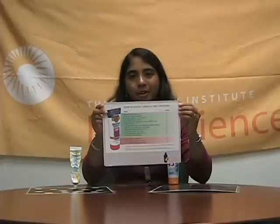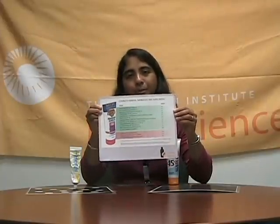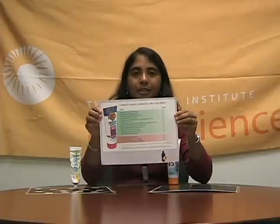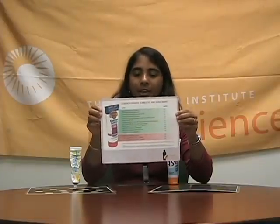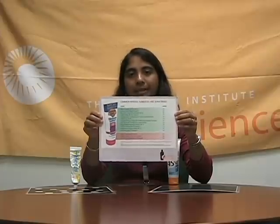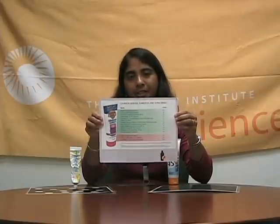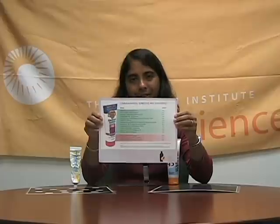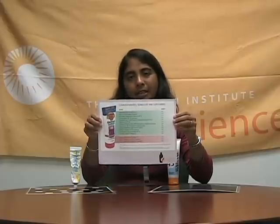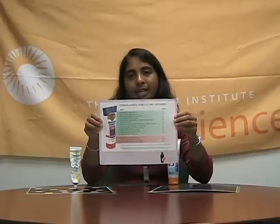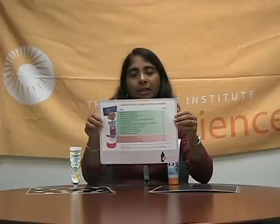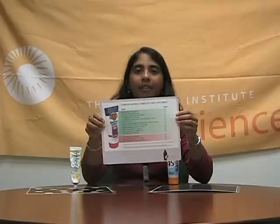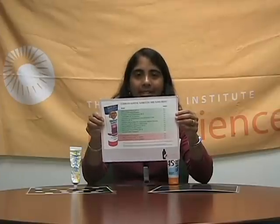There are many products on the market today that use nanoparticles of zinc oxide, but it's hard for the consumer to know because there are no requirements for nano sunblock to be labeled as containing nanoparticles. The way a consumer can tell is by looking at the ingredient list — if it contains ingredients like zinc oxide or titanium dioxide but is also advertised as going on clear or invisible, that means the product likely contains nanoparticles.